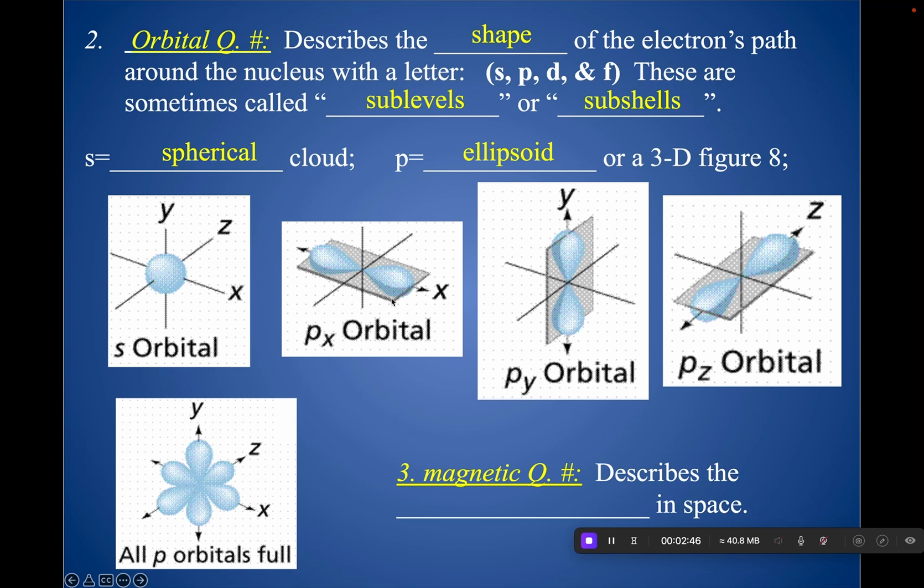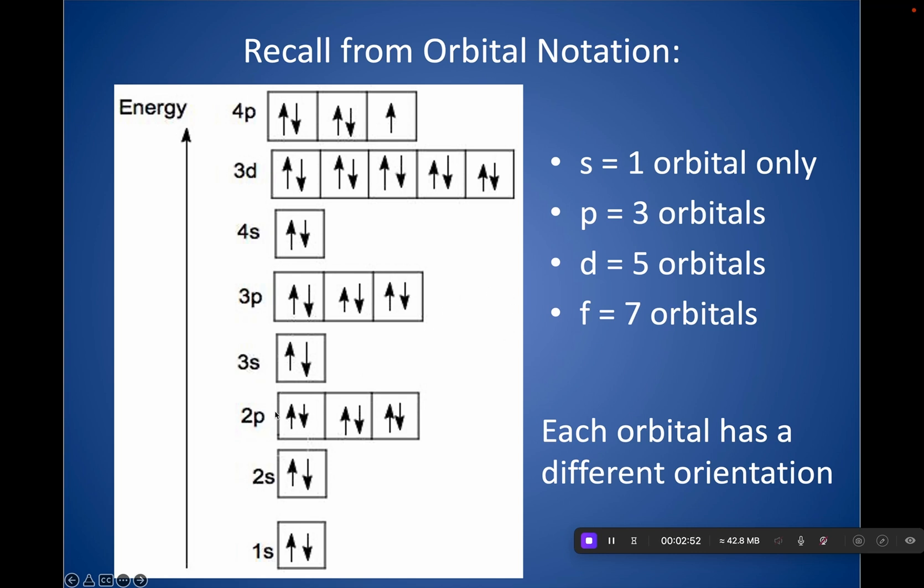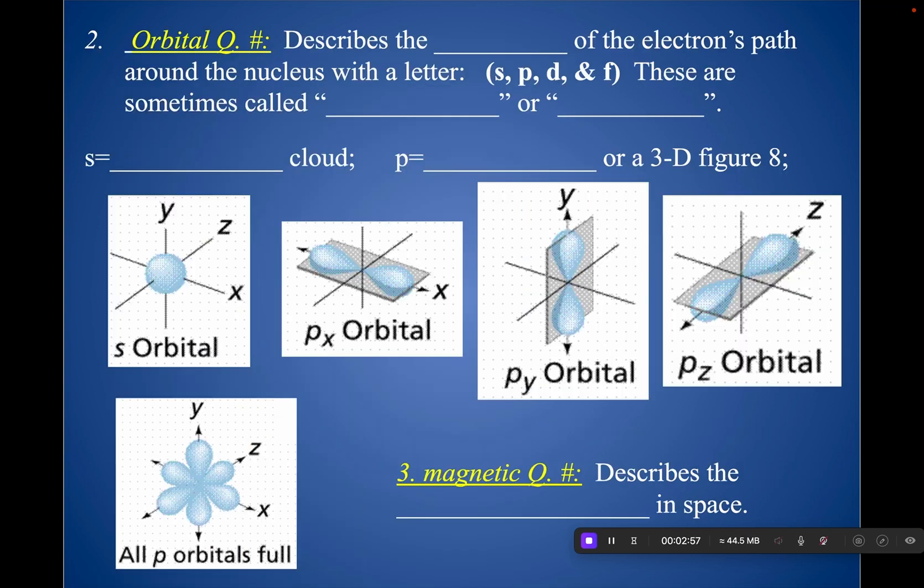And notice that there are three different orientations for P. Because, as you remember, P has three boxes, three different orbitals, and each of those orbitals is in a different orientation. So one is along the x-axis, one is along the y-axis, and one is along the z-axis.